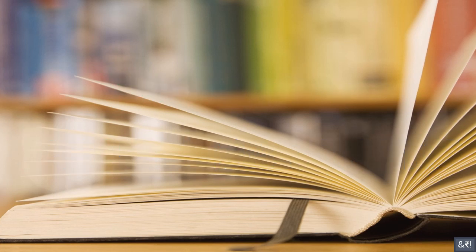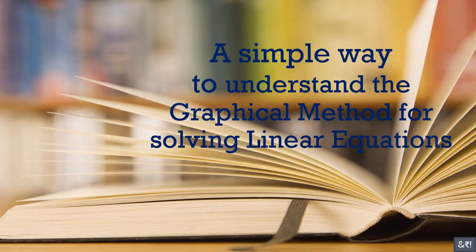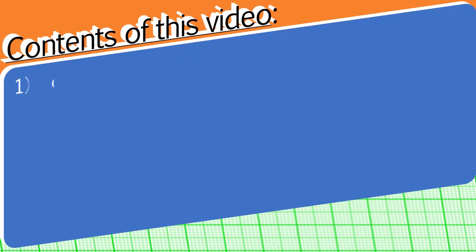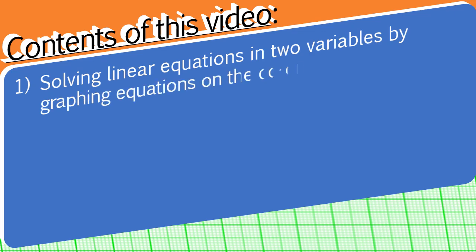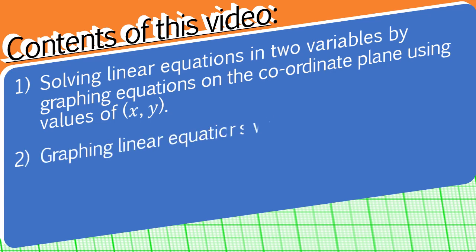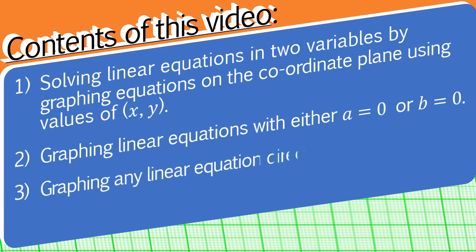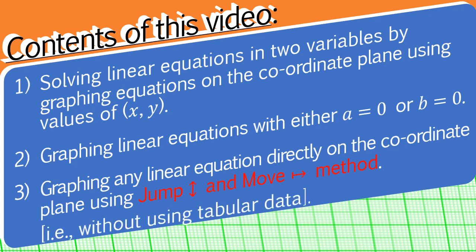Welcome to Easy Learning. A simple way to understand the graphical method for solving linear equations. Contents of this video: 1. Solving linear equations in two variables by graphing equations on the coordinate plane using values of x and y. 2. Graphing linear equations with either a equals zero or b equals zero. 3. Graphing any linear equation directly on the coordinate plane using the jump and move method, that is, without using tabular data. Let us first recall some basics.